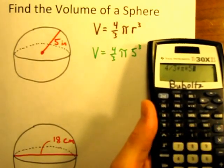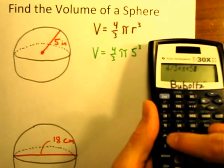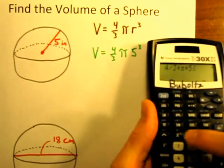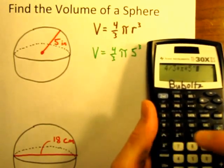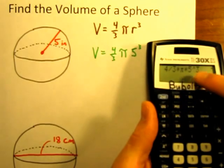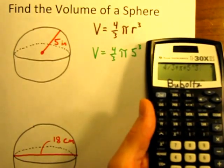Times 5 raised to the third power. On my calculator I have a little caret key right here. It looks like a little arrow pointing up. So I'm going to hit 5, caret key 3, which means 5 raised to the third power.